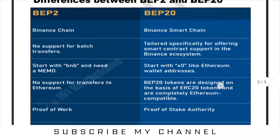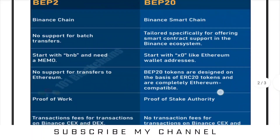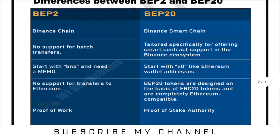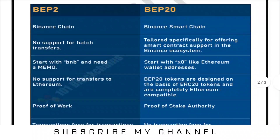Differences between BEP2 and BEP20: BEP2 is native to the Binance Chain, while BEP20 is native to the Binance Smart Chain. BEP2 has no support for batch transfers.